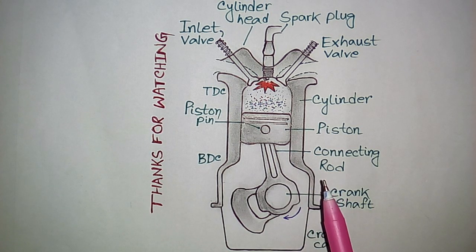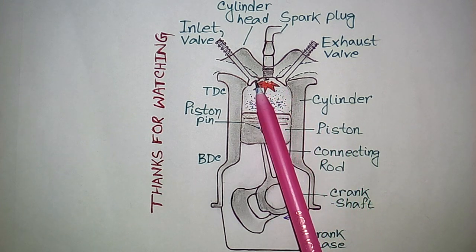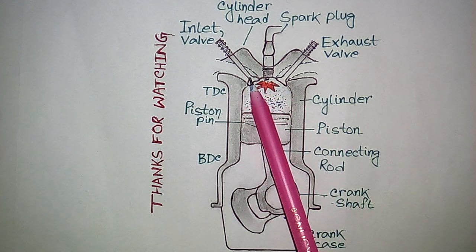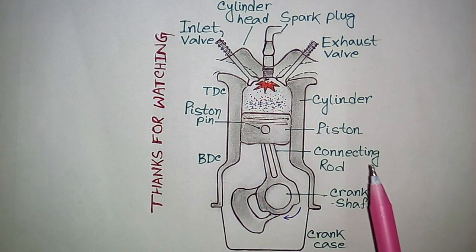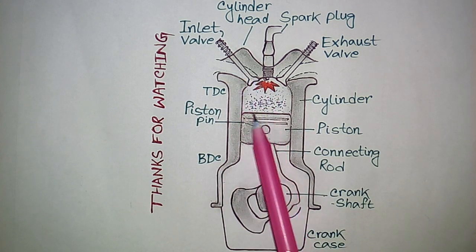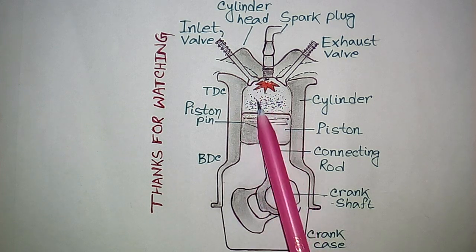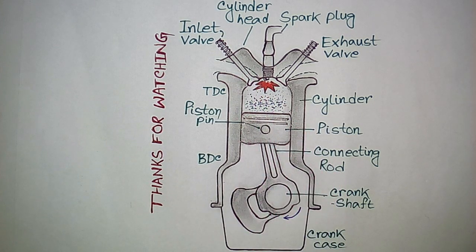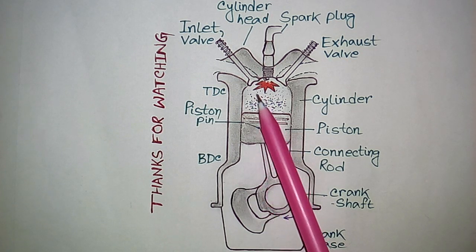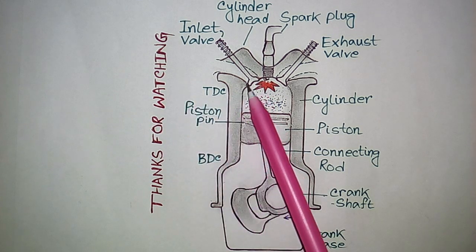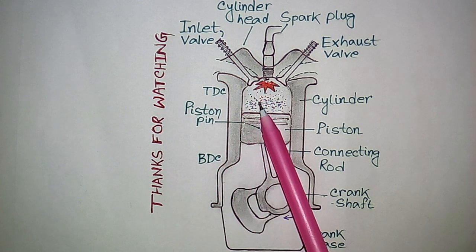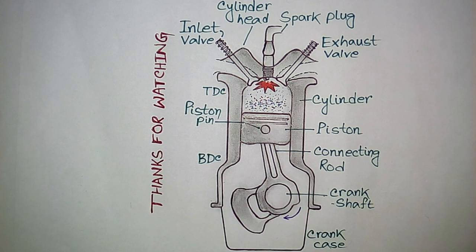First, the cam-operated inlet valve opens. This is the inlet valve, which is cam-operated. It opens first and the air-fuel mixture comes into the cylinder due to the downward motion of the piston. When the piston moves downward, the inlet valve opens and the air-fuel mixture is drawn in.